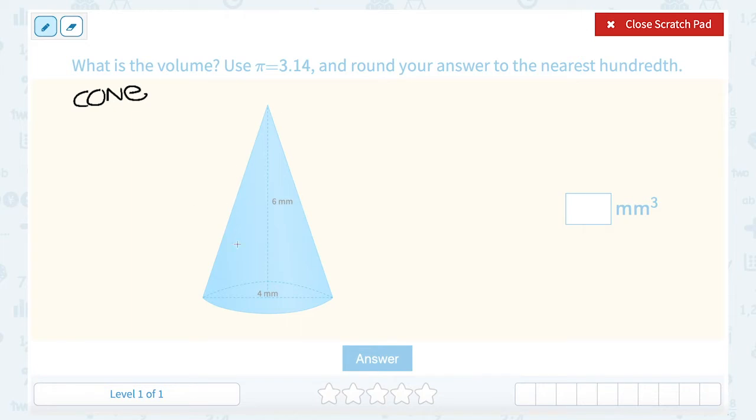Right, it looks like a birthday hat or an upside down ice cream cone. And we know that its base is a circle. So I want to start with my formula for volume of a cone. And my formula for volume of a cone is that V, my volume, is equal to one-third pi r squared h.